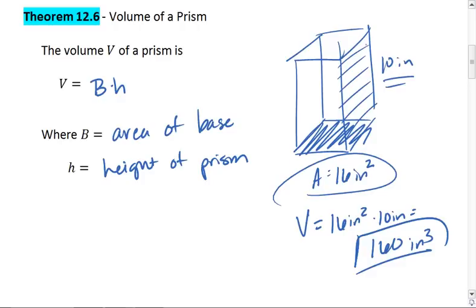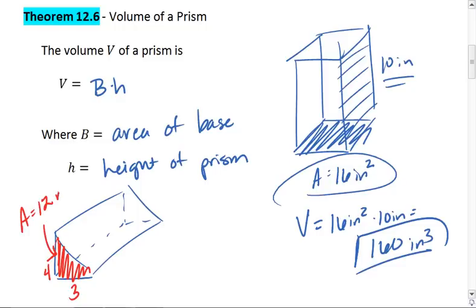And this is true for anything. We could do this for a triangular prism as well. If we had a triangular prism, we could find the area of the base. If this is 3 and this is 4, then the area is 12, and we'll say meters squared. And then we can multiply by the height.